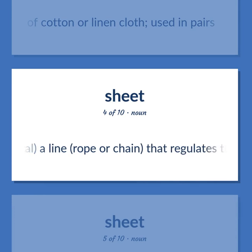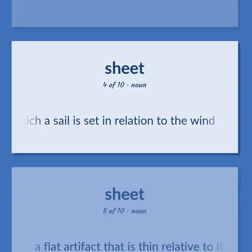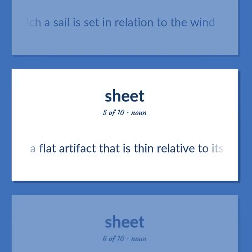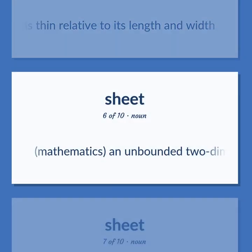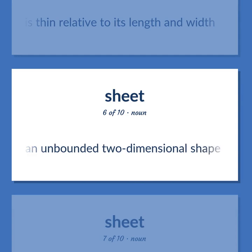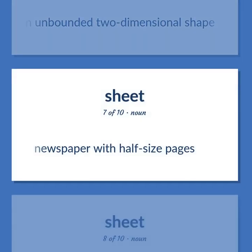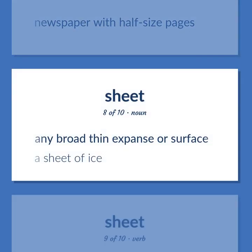Nautical: a line, rope or chain that regulates the angle at which a sail is set in relation to the wind. A flat artifact that is thin relative to its length and width. Mathematics: an unbounded two-dimensional shape. Newspaper with half-size pages. Any broad thin expanse or surface — a sheet of ice.